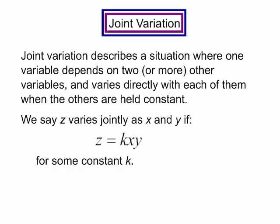Let's talk about joint variation. Joint variation describes a situation where one variable depends on two or more other variables and varies directly with each of them when the others are held constant.